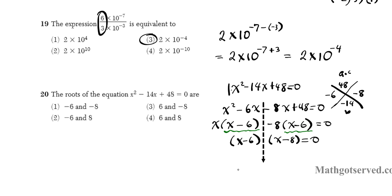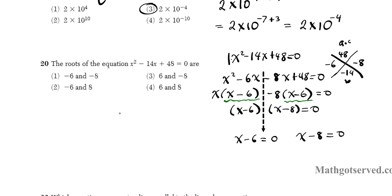Now I'll use the zero product property which involves setting each quantity to 0. And then we'll solve algebraically for x. So to solve this we add 6 to both sides. So the first answer is 6. And in this one we add 8 to both sides. And the next answer is 8. So our answers are 6 and 8. Clearly option number 4 is our correct answer. So there you have it.